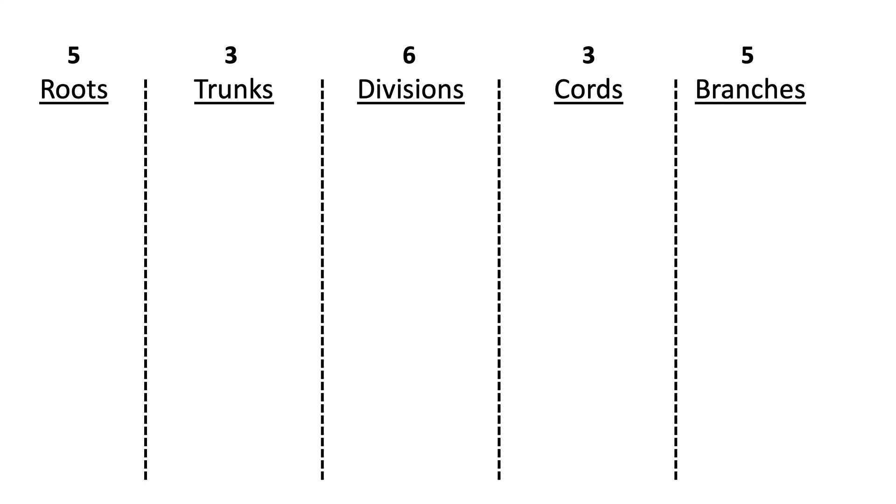As far as the five roots go, they stem from the ventral primary rami of spinal nerves C5, C6, C7, C8, and T1.